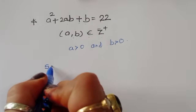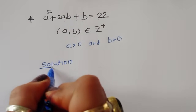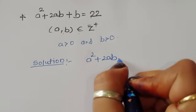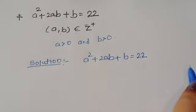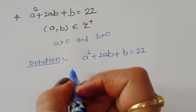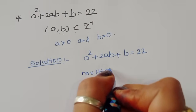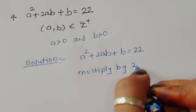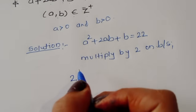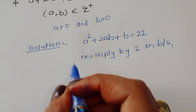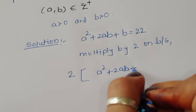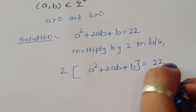Let's see the solution. We start with a² + 2ab + b = 22. We can multiply by 2 on both sides, giving us 2(a² + 2ab + b) = 44.